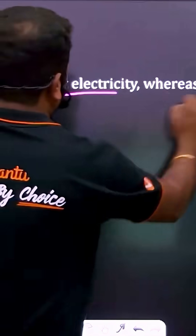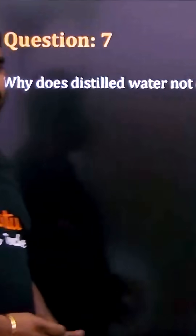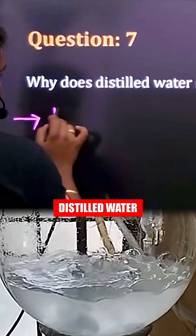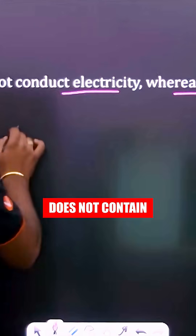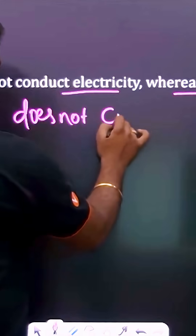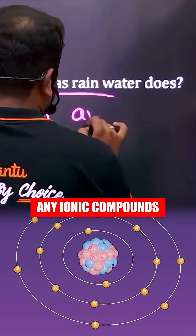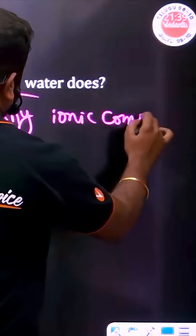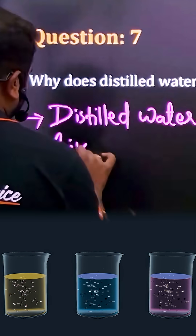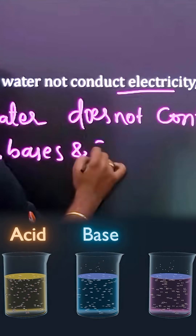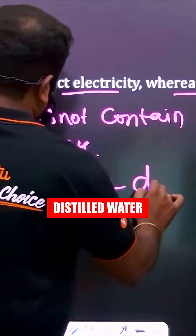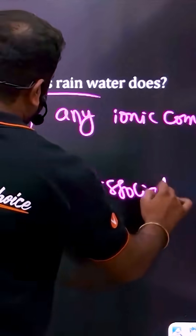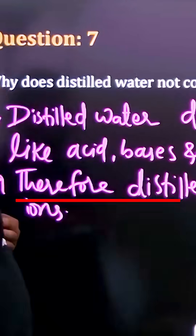Why does distilled water not conduct electricity, whereas rainwater does? Distilled water does not contain any ionic compounds like acids, bases, and salts. Distilled water does not dissociate into ions.